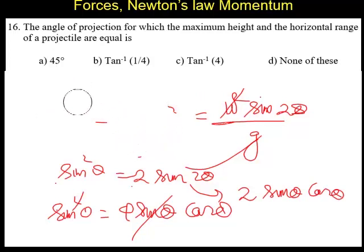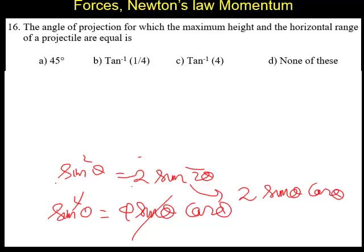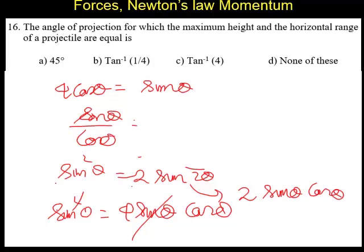4 cos theta equal to sine theta. Sine theta by cos theta equal to 4, which is tan theta. Tan theta equal to 4, or theta equal to tan inverse of 4.